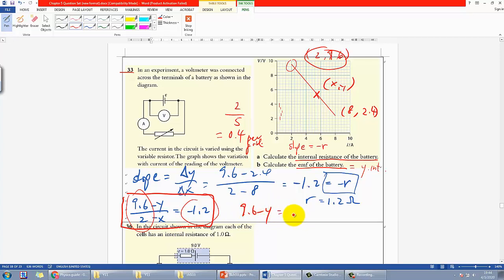So I can do negative 2.4 plus 1.2x, then negative y. Let me rearrange: 9.6 plus 2.4 makes 12 minus 1.2x. And that's it, actually. This is the equation y = mx + c, and that's still negative 1.2, which is what we found earlier. So small r equals 1.2, and therefore the y-intercept is 12, so epsilon is 12V.